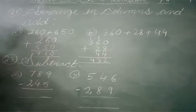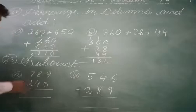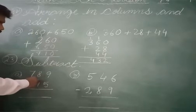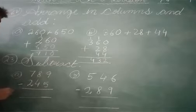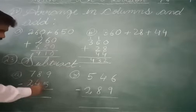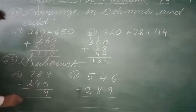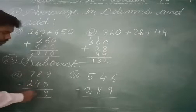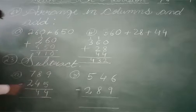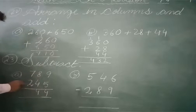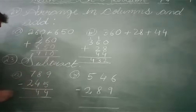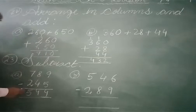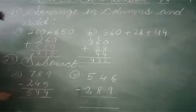Next we have subtraction, which is also very simple. Here: 5 plus how much equals 9? Yes, 5 plus 4 equals 9 — write 4. Then 4 plus how much equals 8? Very good, 4 plus 4 equals 8 — write 4. Then 2 plus how much equals 7? Five. So we write 5. The answer is 544.